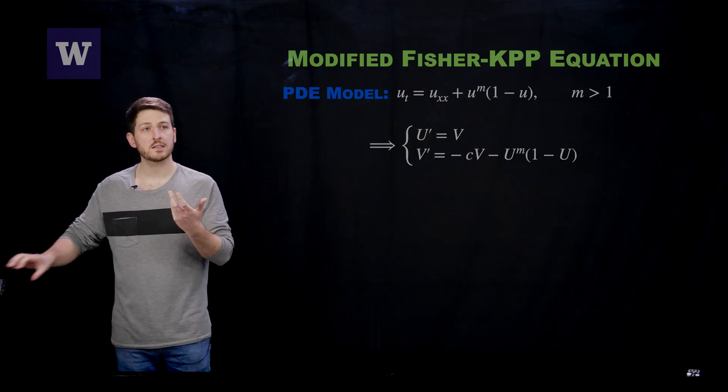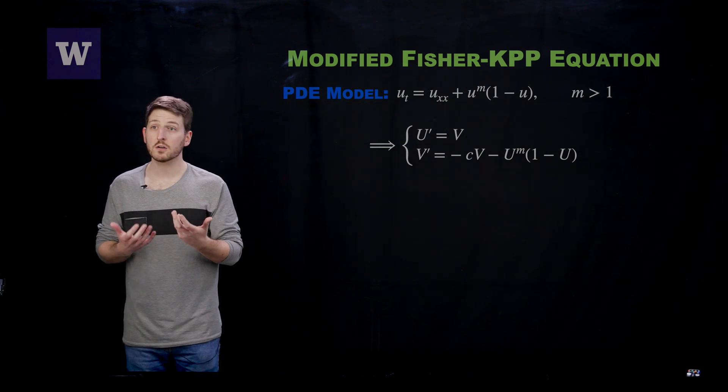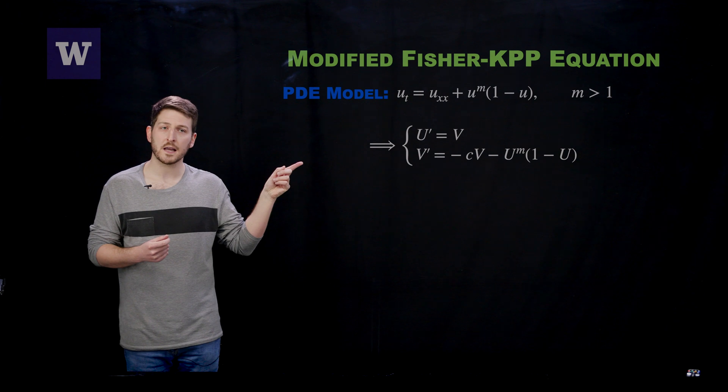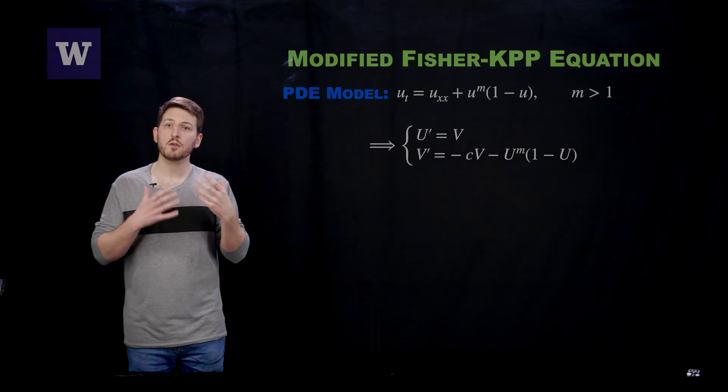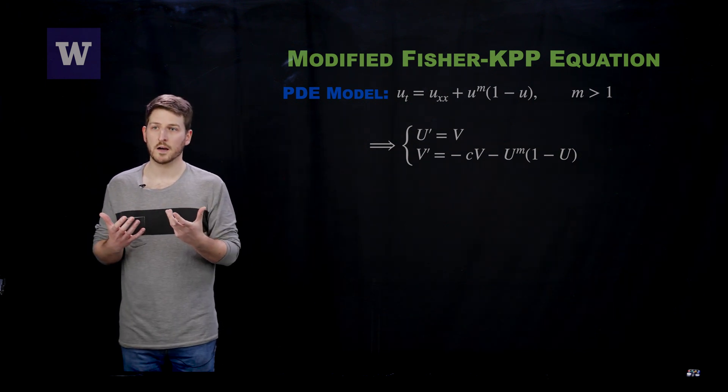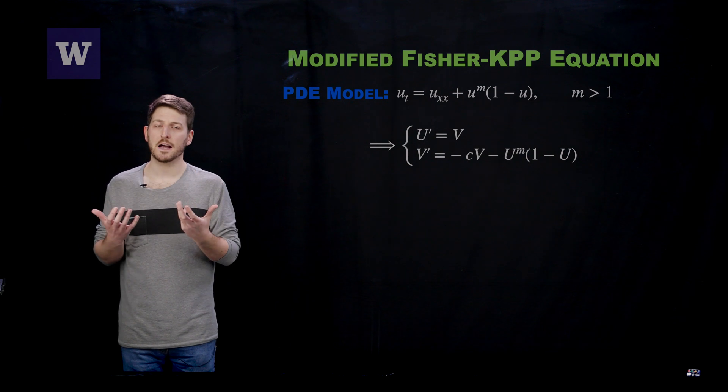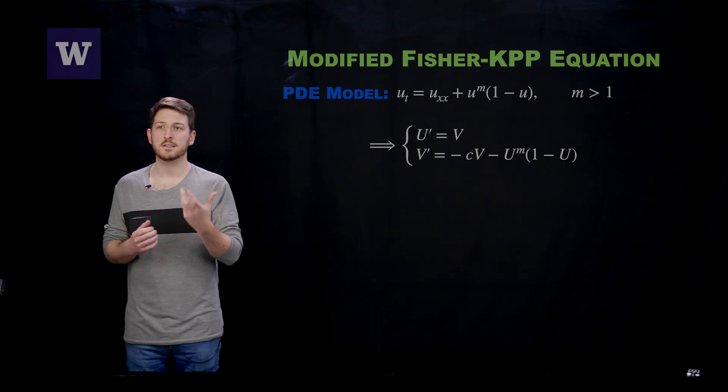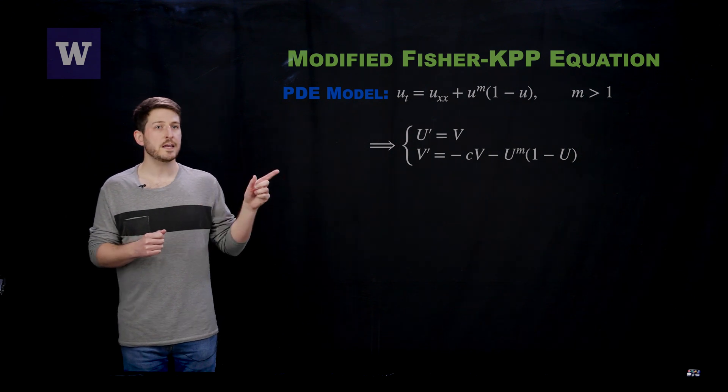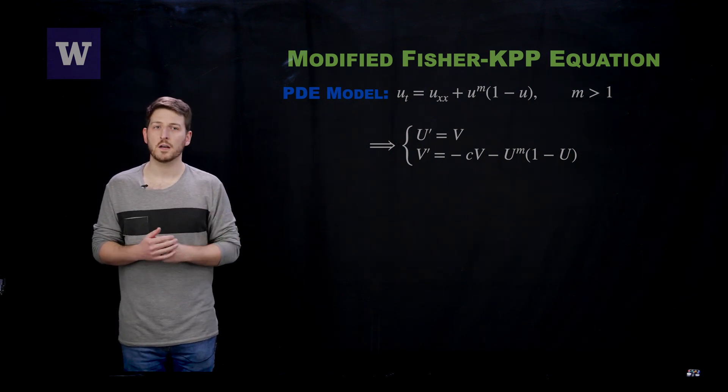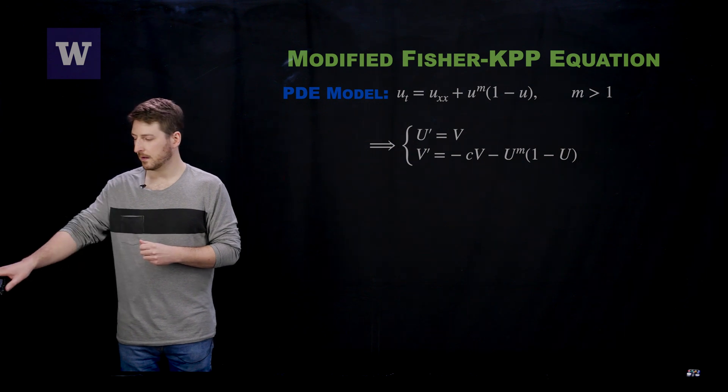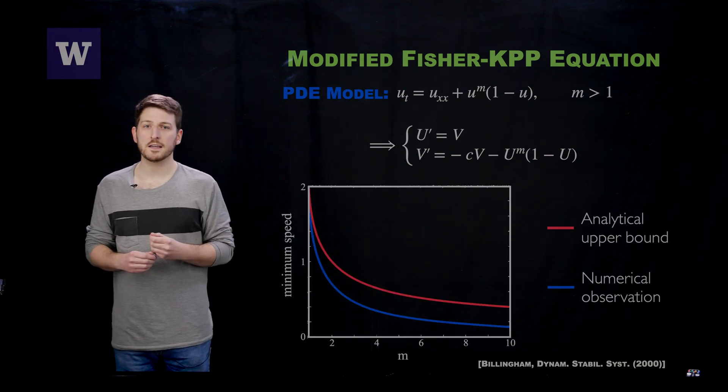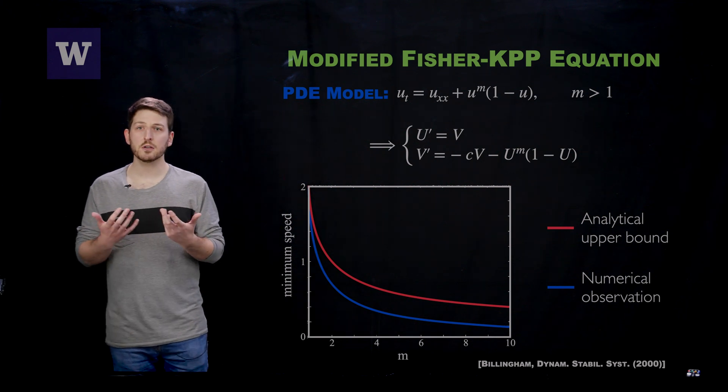You can follow through the same methods that we were using for the Fisher-KPP equation. You can again arrive at a planar dynamical system. But if you think back to what happened on the previous slide, essentially, the analysis came down to just linearizing around that asymptotic red state. In this case, that analysis will fail due to the exponent m being added on.